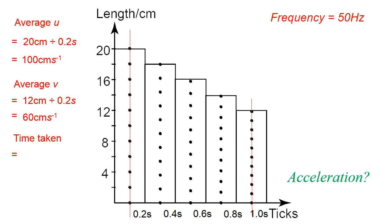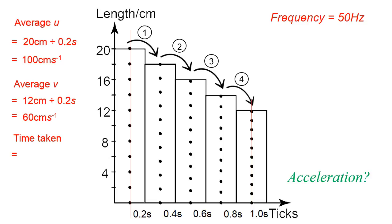From the midpoint of the first strip to the second strip is 1 interval, second to third is 2, third to fourth is 3, and fourth to fifth is 4. So the time taken between the midpoint of the first strip to the midpoint of the last strip is 4 times 10 ticks, which is 4 times 0.2 seconds, giving 0.8 seconds — the time taken for the acceleration to occur.